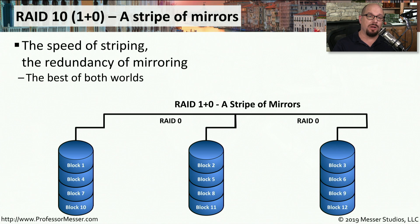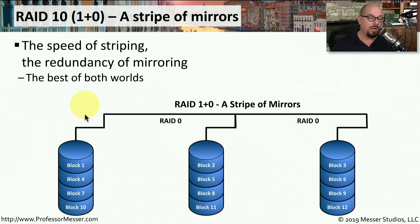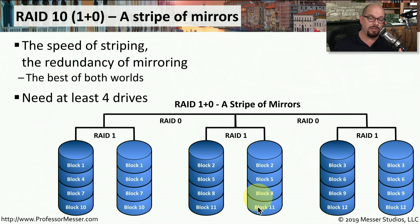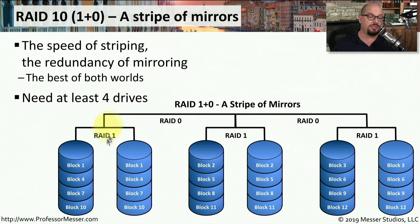With RAID 10, or RAID 1 plus 0, we have a stripe of mirrors, combining RAID 0's performance with RAID 1's mirroring and redundancy. To configure RAID 1 plus 0, we first stripe information across drives — putting a block on one drive, a block on another, and a block on a third. But if we lose any one of those drives, we'd lose all the data. So to fix that, we add a mirror of each set of blocks — a RAID 1 of the first block, a RAID 1 of the second, and a RAID 1 of the third — while still striping across all those mirrors. This combines the performance of RAID 0 with the redundancy of RAID 1.